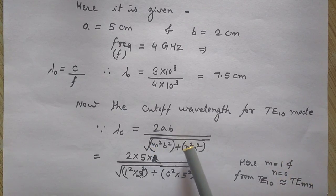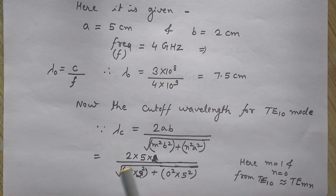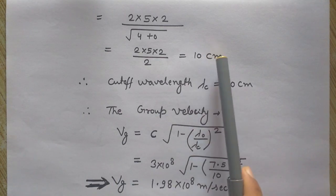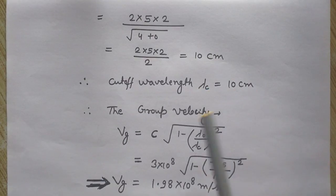So let's put the values of M and N here and values of A and B are also given. So A is 5, B is 2. So put these values here and you will get the cutoff wavelength for TE10 mode. On solving, I get 10 centimeter. So the cutoff wavelength lambda C is 10 centimeter in this case.